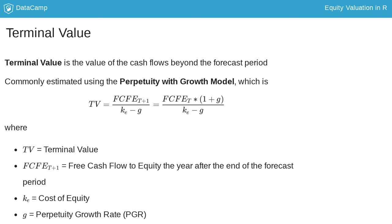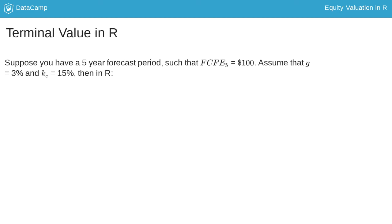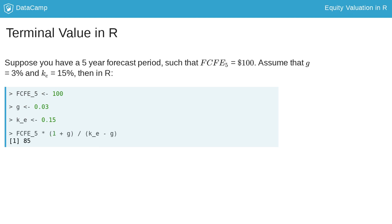Let's go through an example of coding this in R. Suppose you have the FCFE in the 5th year of the forecast period as $100. Also assume that the PGR is 3% and the cost of equity is 15%. In R, we first grow the year 5 FCFE by the PGR for one year, then divide it by the difference of the cost of equity and perpetuity growth rate to get to $858.